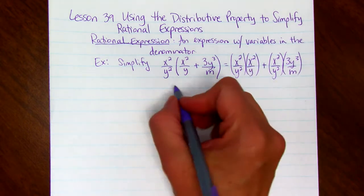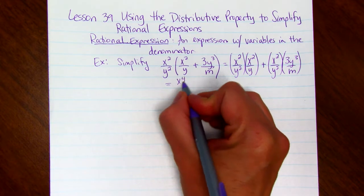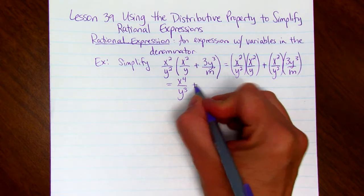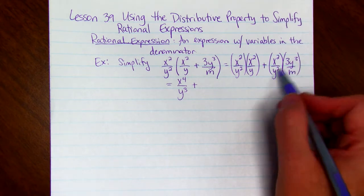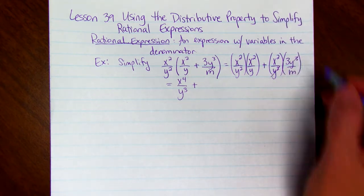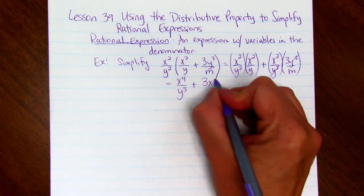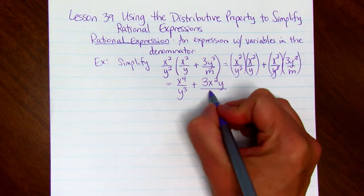So x squared times x squared is x to the fourth, divided by y cubed, plus, here we can cancel y squared. So we just get y in the numerator. So we have 3x squared y divided by m.